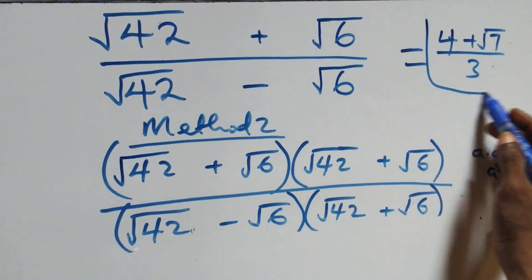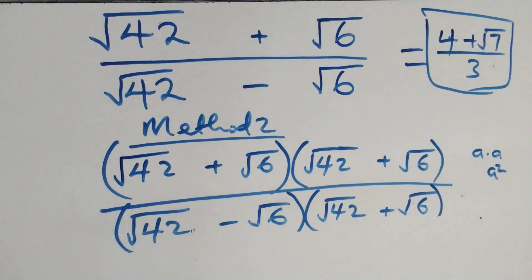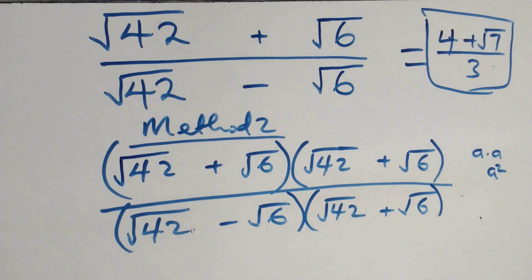Therefore, the simplified form of the given expression is (4 + √7) / 3. Thank you for watching — please subscribe, turn on the notification bell, share the video, give a thumbs up, and see you in the next class!